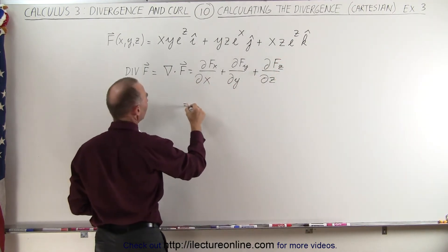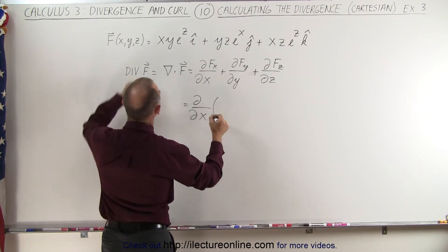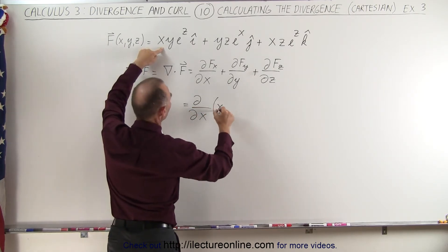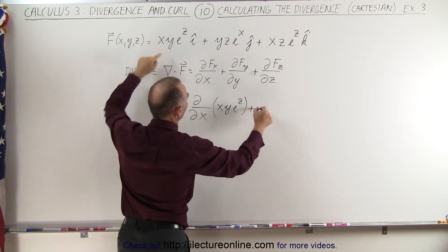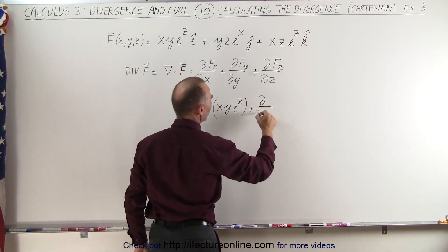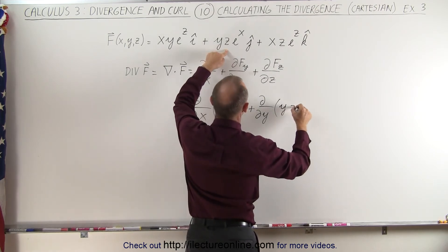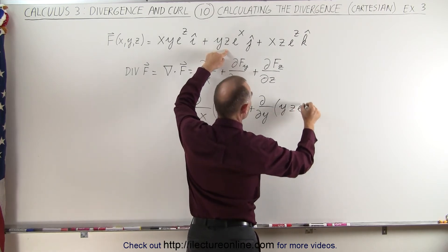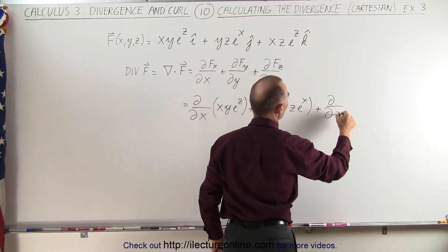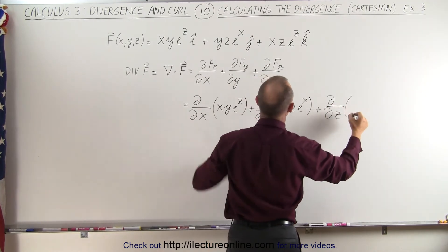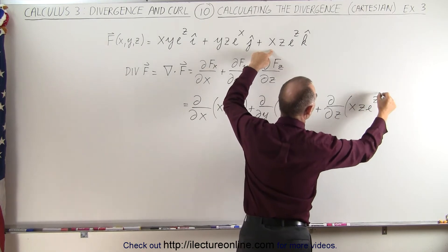And then plugging those in: the partial with respect to x of the x component is x·y·e^z, plus the partial derivative with respect to y of the y component y·z·e^x, plus the partial derivative with respect to z of the z component, which is x·z·e^z.